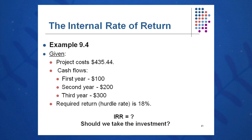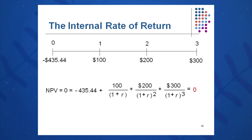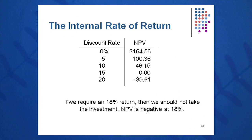Here's another example. The project costs 435.44 million — a cash outflow today. It brings in 100 million in year one, 200 million in year two, and 300 million in year three. The required return is 18%. We write NPV equals zero equals minus 435.44 plus 100 over (1 + R) plus 200 over (1 + R)² plus 300 over (1 + R)³. We do an NPV profile, plugging in 0%, 5%, 10%, 15%, 20% for R. The IRR comes in at 15%, and since the CFO has an 18% hurdle rate, NPV is negative at 18% — we reject this project.